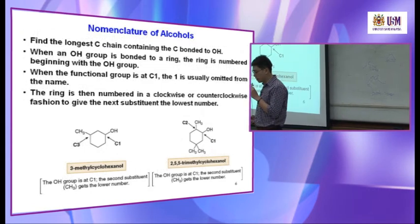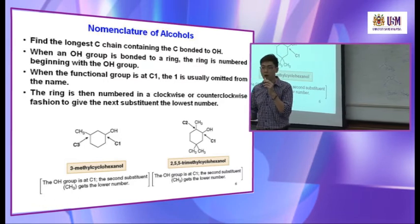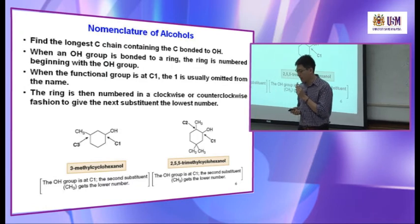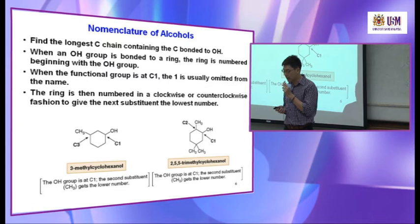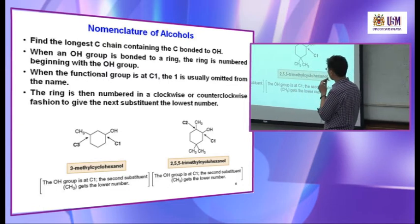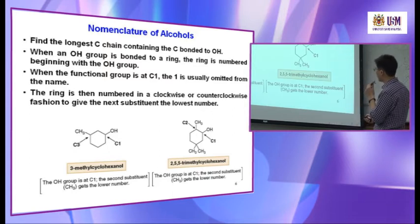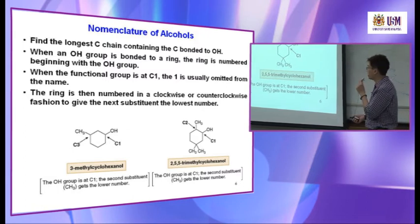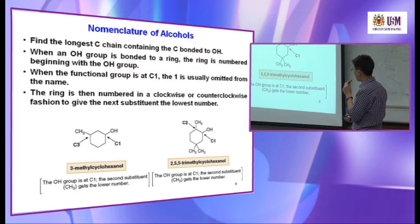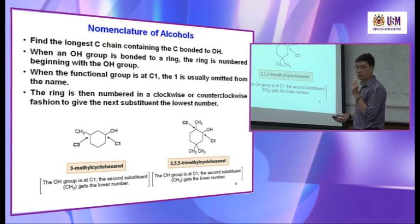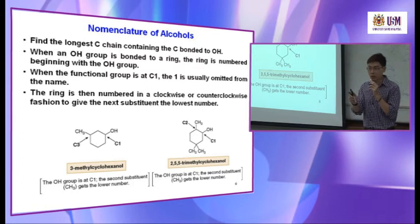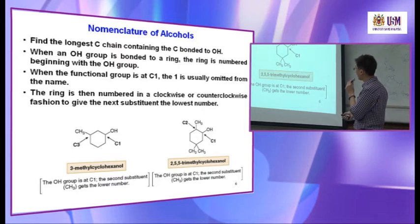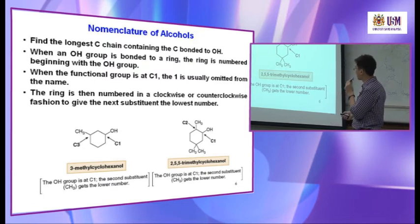Now we come to the nomenclature of alcohol — the naming of alcohol. The first step: find the longest carbon chain containing the carbon bonded to OH. For example, this is a cyclohexane with an OH group. You count from here: one, two, three, four, five, six. Because this is a cyclohexane, the carbon bearing OH is always numbered one. You try to give the next substituent the smallest number possible.